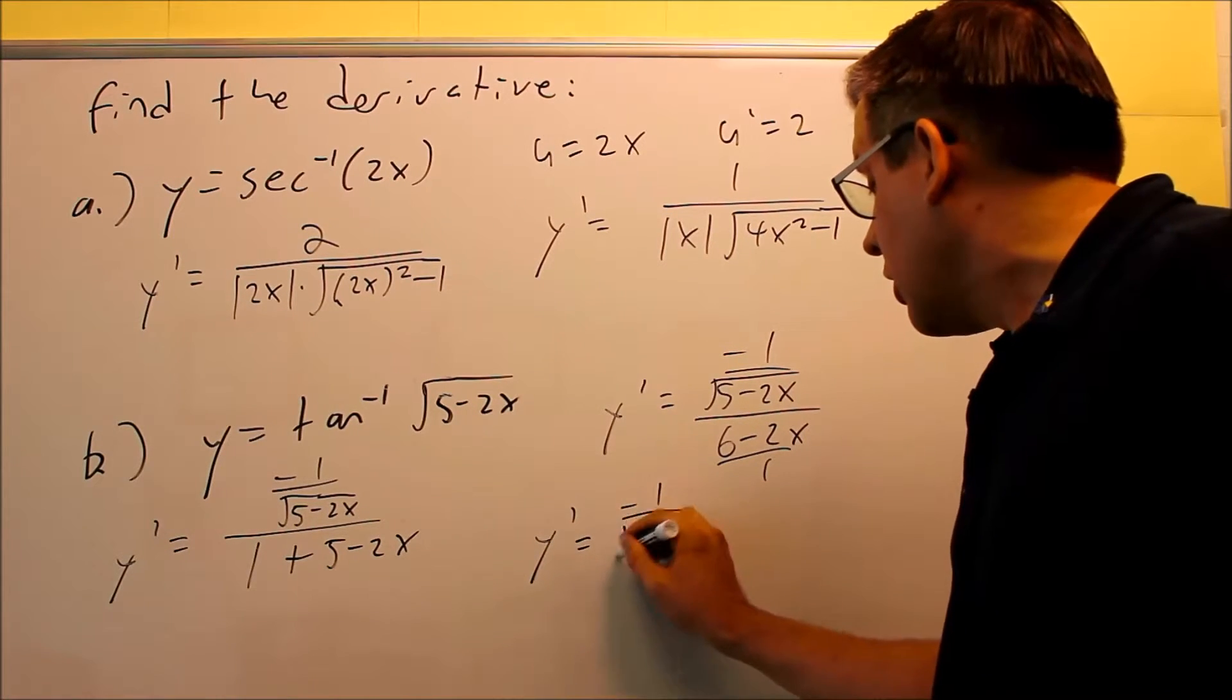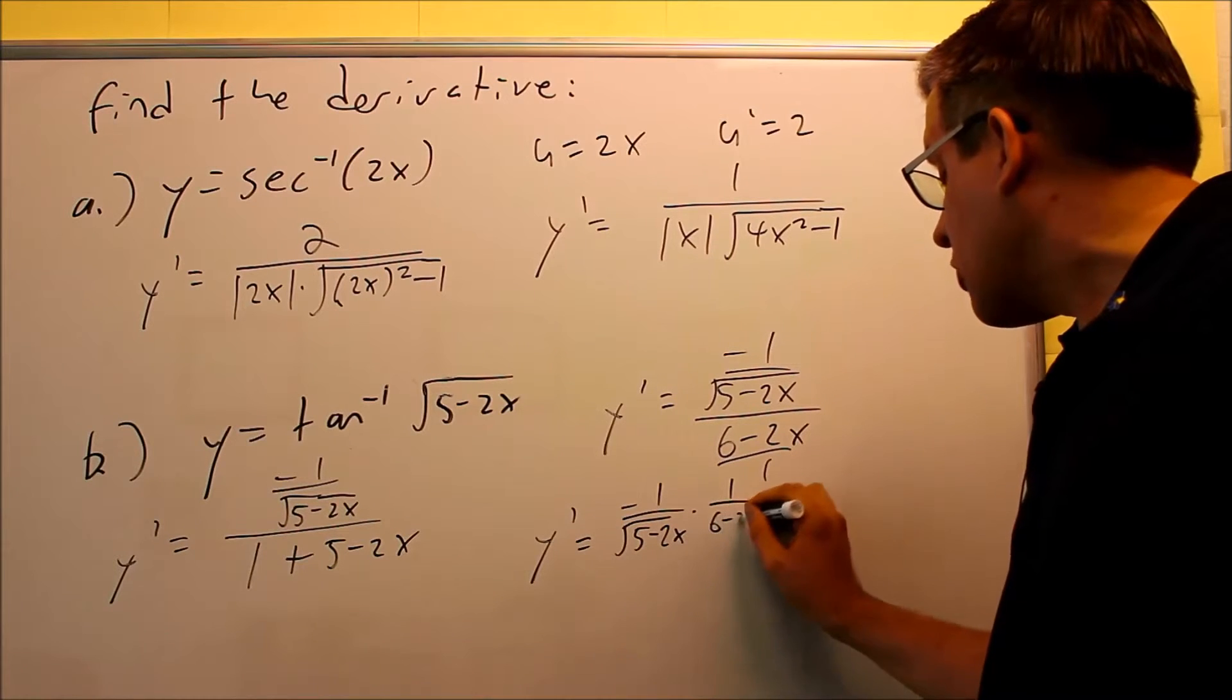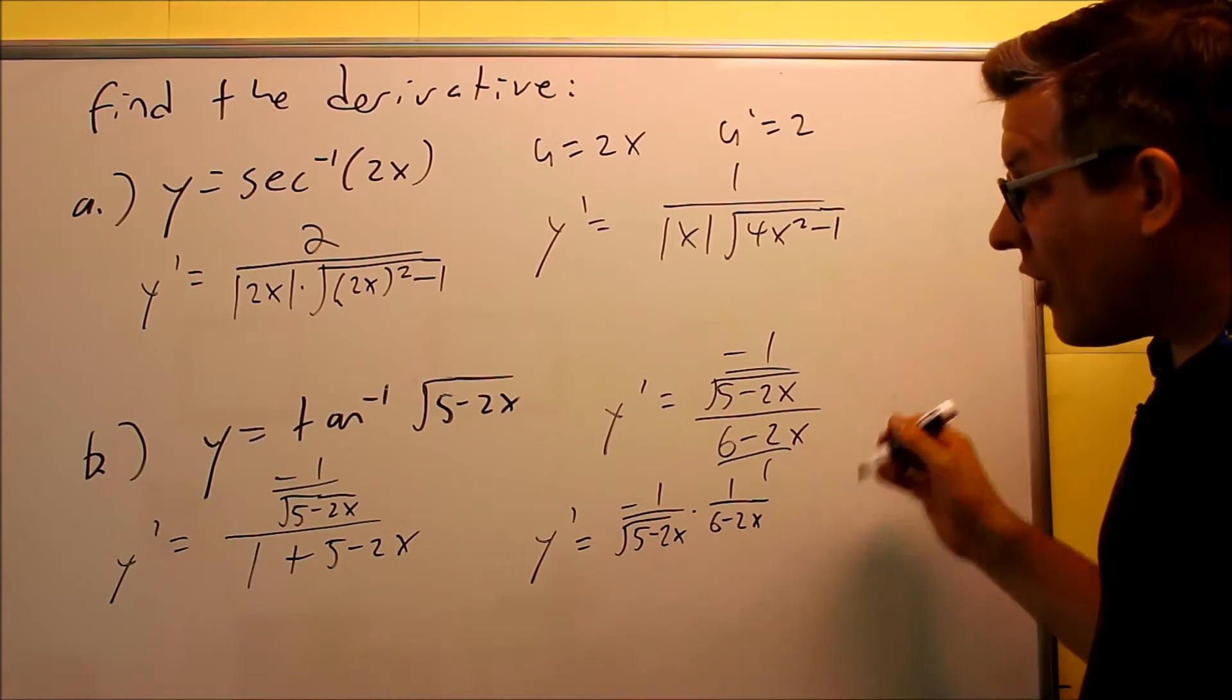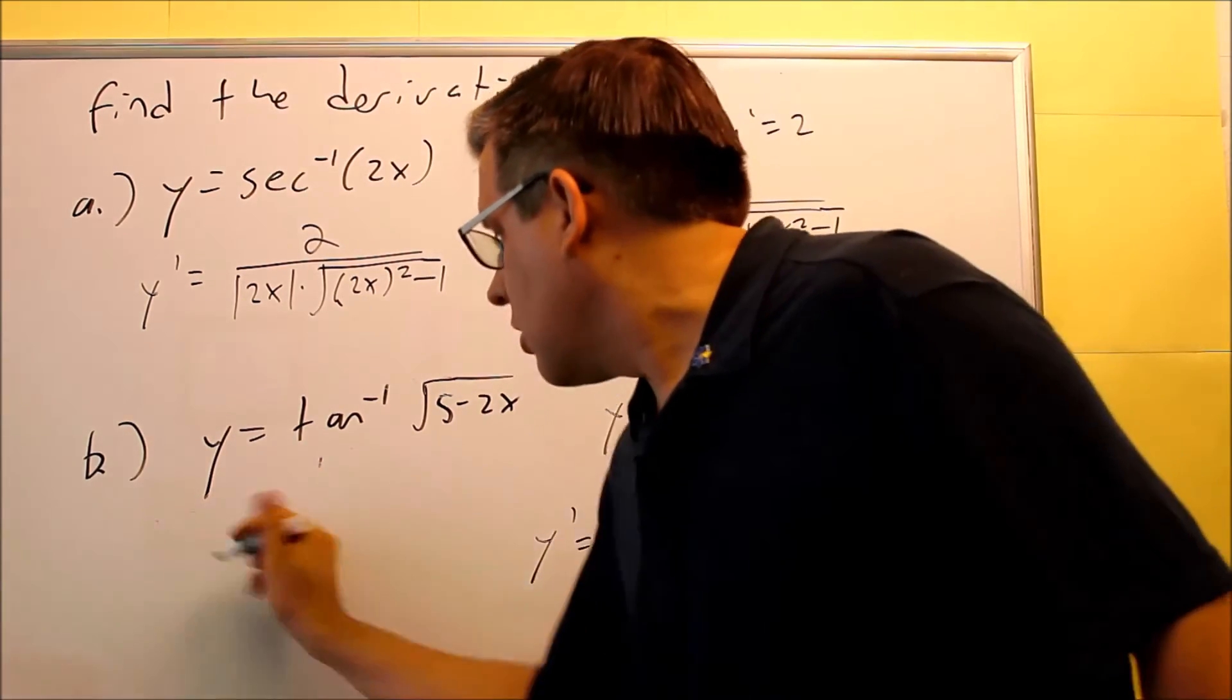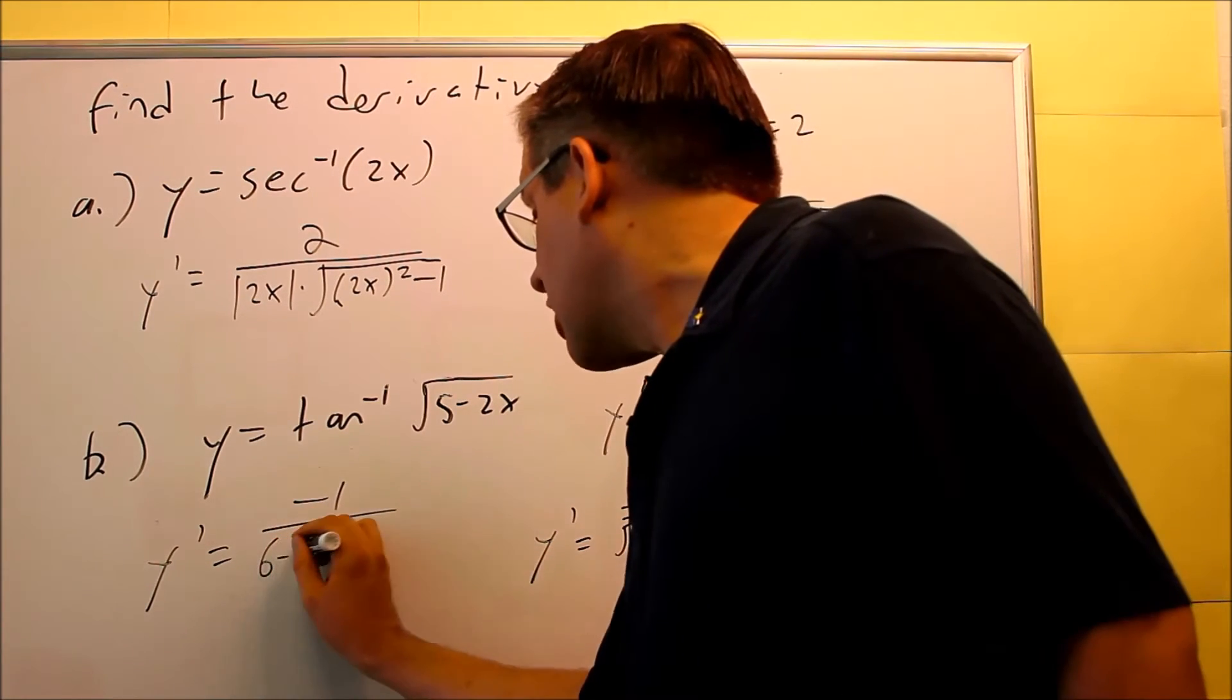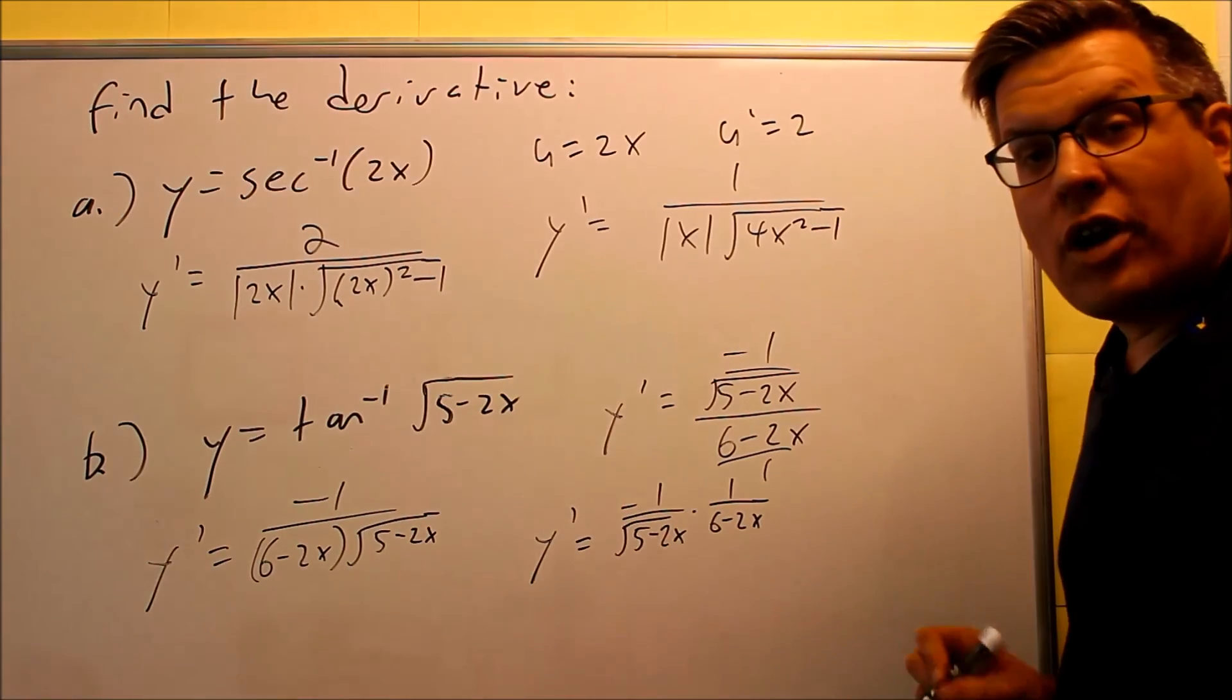y-prime equals negative 1 over the square root of 5 minus 2x, and then we're going to multiply it by this reciprocal, 1 over 6 minus 2x down below. The final answer I'll put here. Final answer is basically putting these both together, negative 1 on top, on the bottom we have 6 minus 2x times the square root of 5 minus 2x. You could factor it if you want to, in this case it doesn't really matter. This would end up being your final answer.